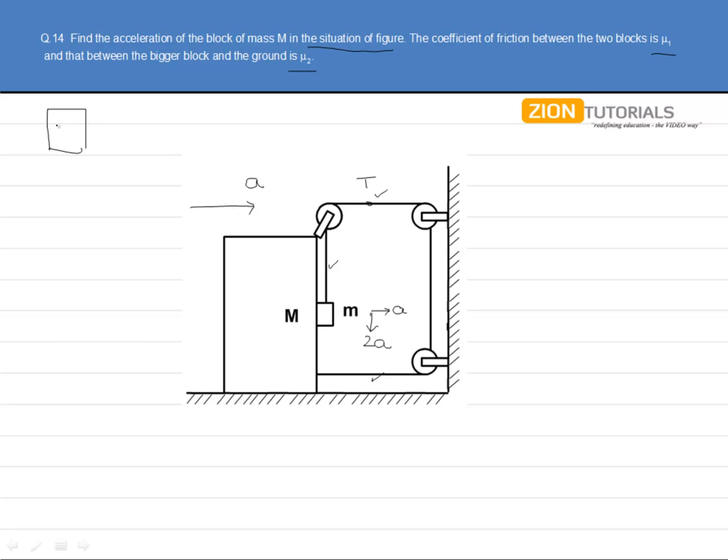We have capital M moving to the right with an acceleration A, having a normal reaction N2, having an N1 reaction to the left, a frictional force to the left, an Mg force in the downward direction, a μ1 N1 frictional force in the downward direction, and a tension T in the right direction.